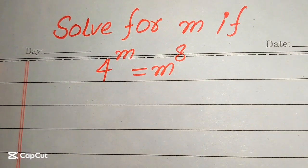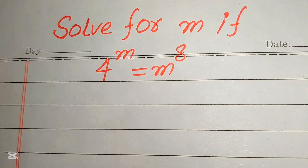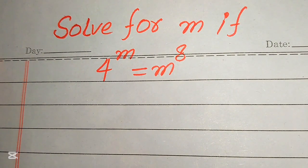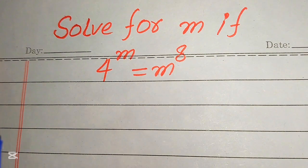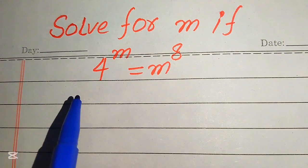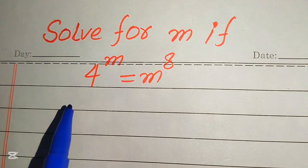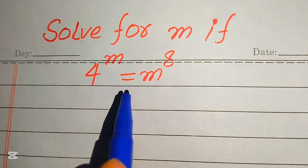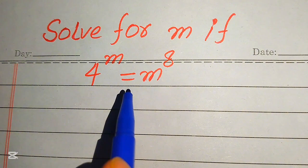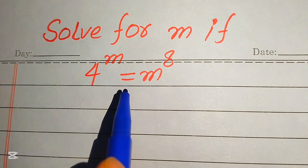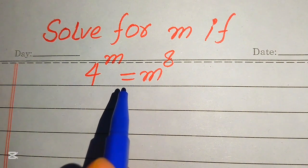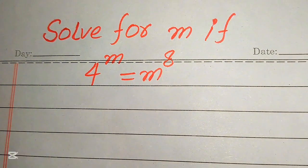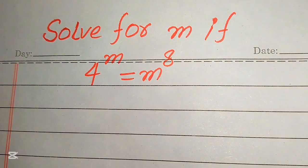Hello everyone. Today I want to show you how to solve this problem for the values of m, where 4 to the power of m is equal to m to the power of 8, and we solve this problem for all the values of m.